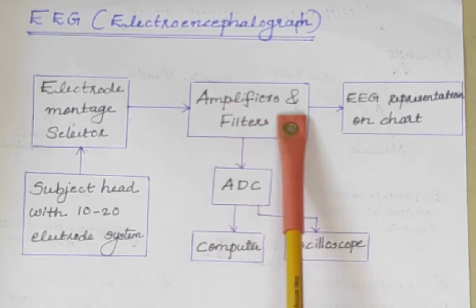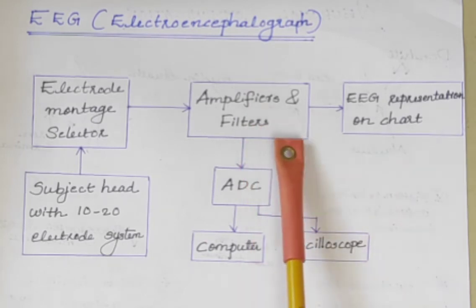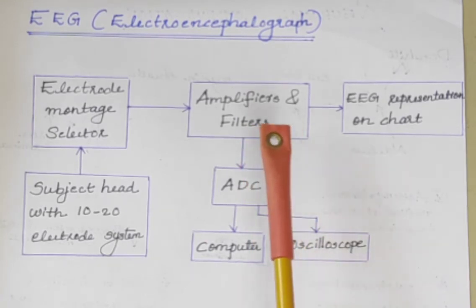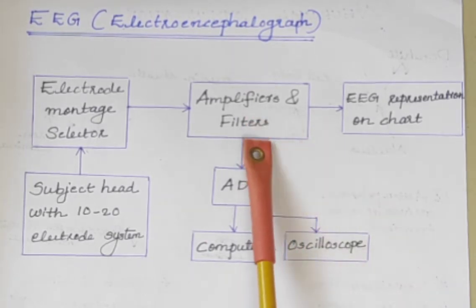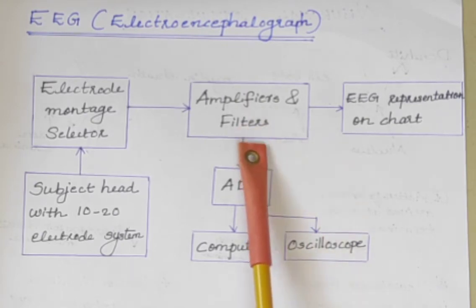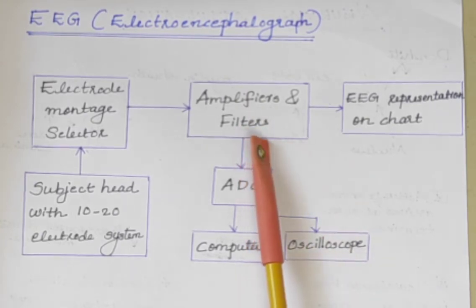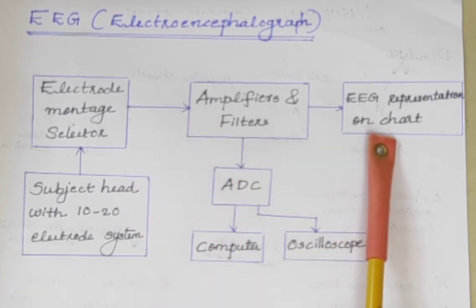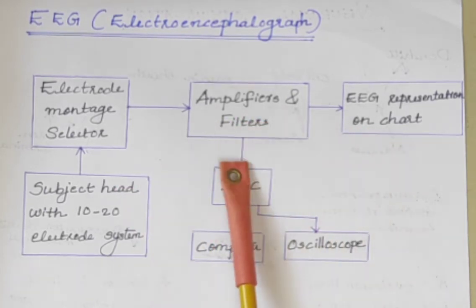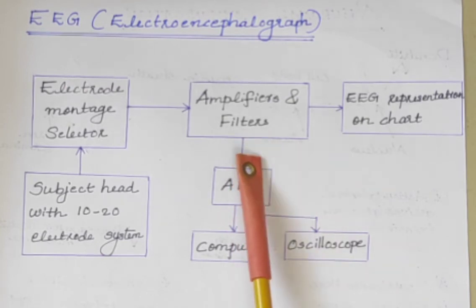Next are the filters. Noise is a major problem in EEG waveforms, so we have to filter out these noise contents. This function is done by a bank of filters in the EEG machine system, which are selected according to the need.